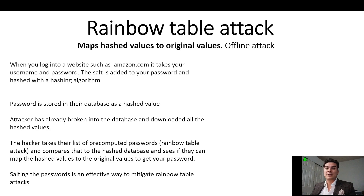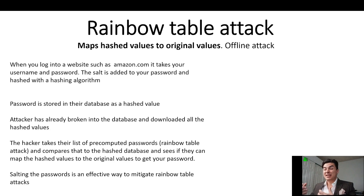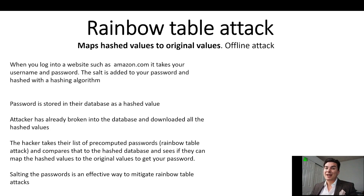So with a rainbow table, that's where they're taking a mapped hash value to the original plain text value. It's typically an offline attack, and how this typically works is that you log into a website such as Amazon.com, and it takes your username and password. A company doesn't want to store your password in their database because that's risky if someone were to break in.